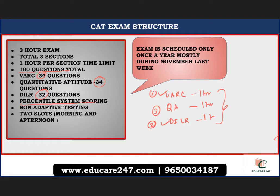CAT uses non-adaptive testing, unlike GMAT which has adaptive testing. The exam has two slots — a morning slot and an afternoon slot — because the number of students is quite high. The exam happens only once a year, mostly during the last week of November, on a Saturday or Sunday. Half the students appear in slot one and half in slot two. The difficulty and question structure are almost the same across both slots.